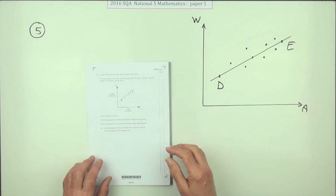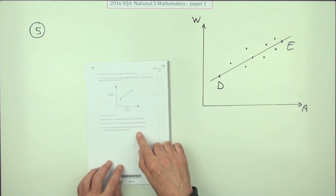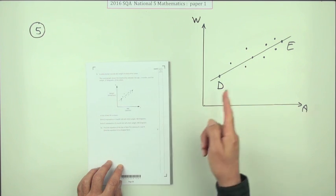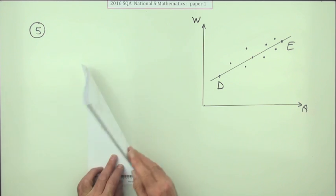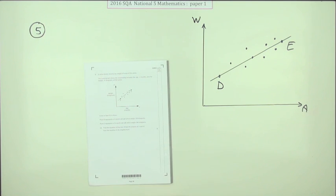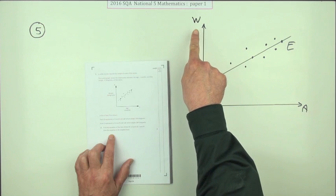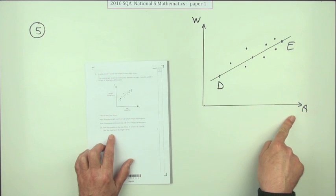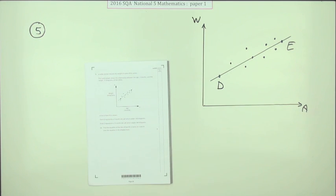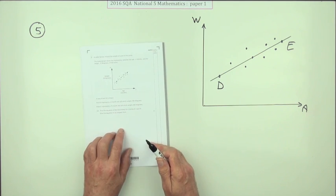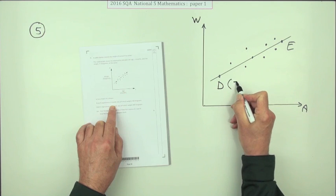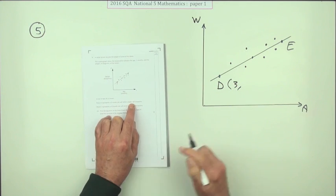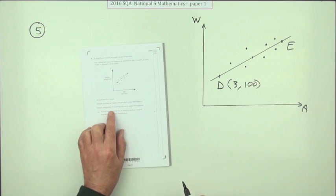Number five from the first paper of the 2016 National 5 exam. The question asks for the equation of a line of best fit for three marks, and then using it for one more mark — four marks total. This part represents the weight and this part represents the age, so make sure you get your coordinates the correct way around. Point D represents a three-month-old calf which weighs 100 kilograms.